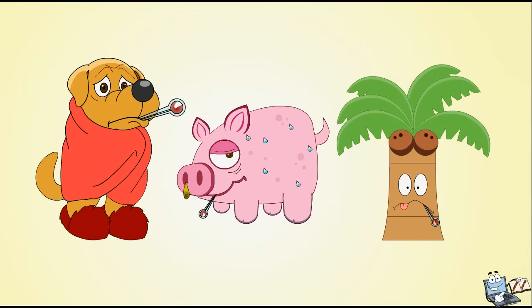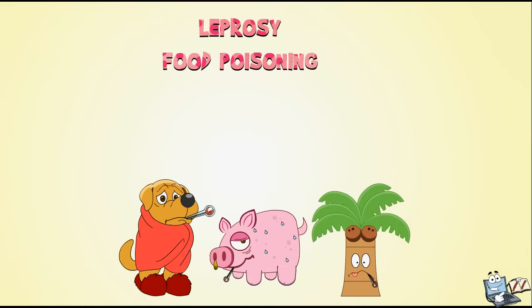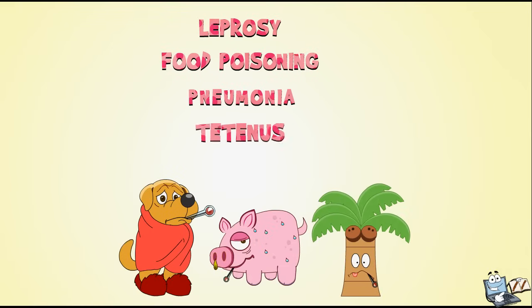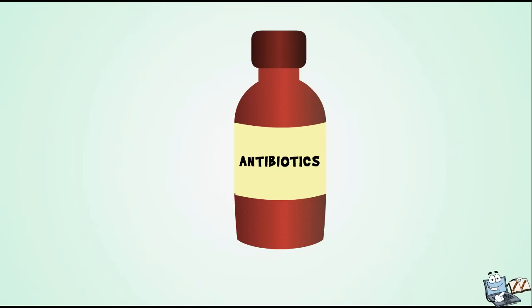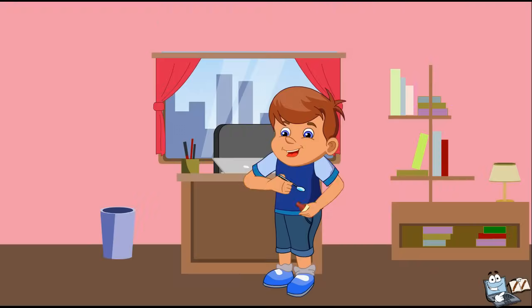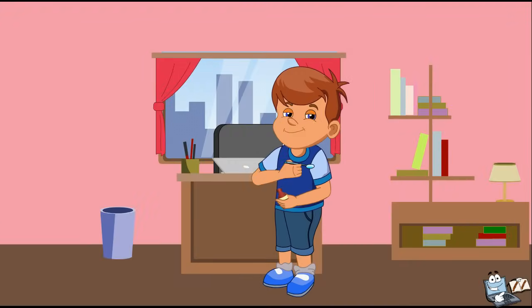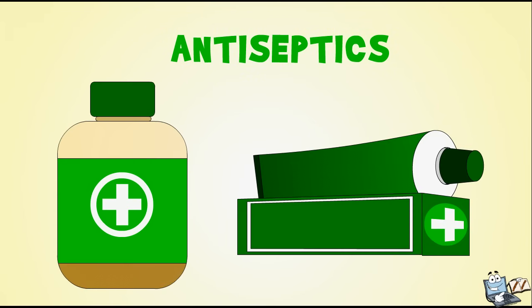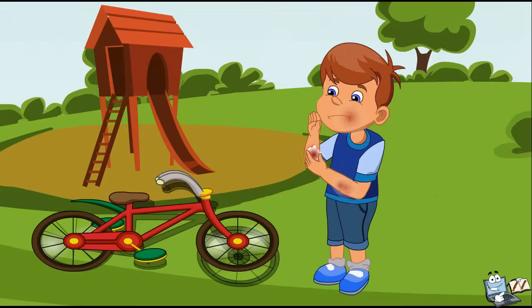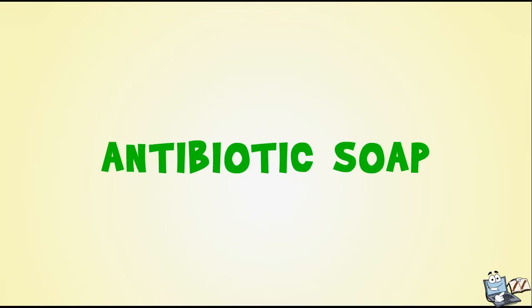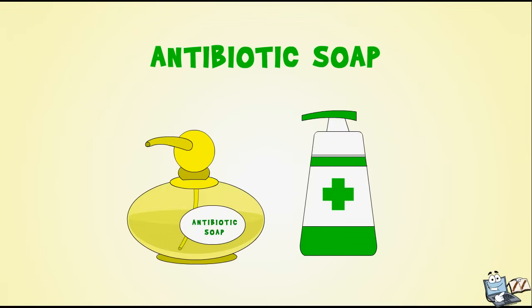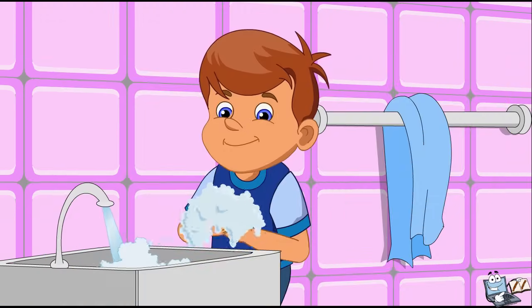Some examples of pathogens are leprosy, food poisoning, pneumonia, tetanus, and typhoid fever. Nowadays, we have antibiotics we can take which help to fight against the bad pathogens. We also have antiseptics to help us keep wounds clean of bacteria and antibiotic soap we use to wash to help keep off bad pathogens. This is why we should wash our hands again and again.